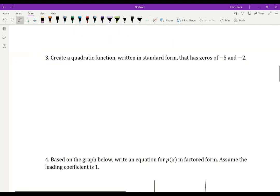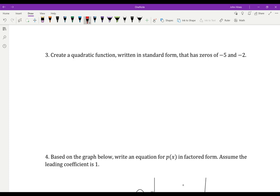So create a quadratic function written in standard form. Standard form is ax squared plus bx plus c. That has 0s, so x equals negative 5 and x equals negative 2. So if those are my 0s, what are my factors? What factors did that come from? Well, that came from x plus 5. And that came from x plus 2.